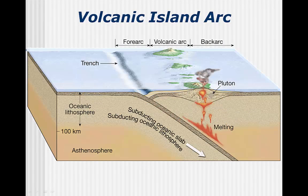When two oceanic plates collide, the older and therefore denser plate is subducted. Water squeezed out of the subducting plate lowers the melting point of the overlying rock. This melted material is less dense and rises to the surface. The volcanoes in this case are in the ocean and form a volcanic island arc, such as the Japanese islands. The area between the volcanic arc and the trench is called a forearc area.